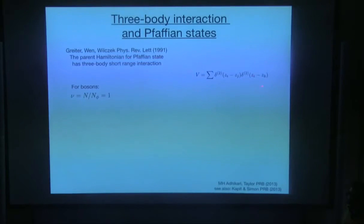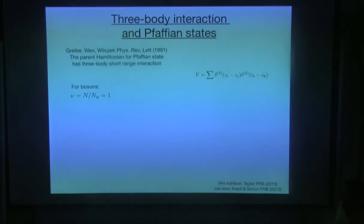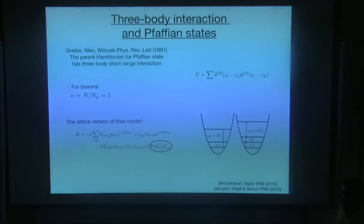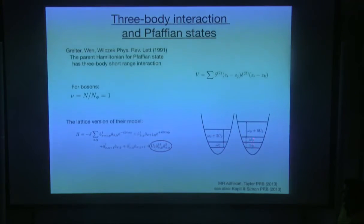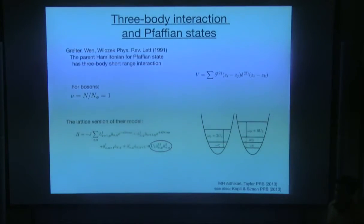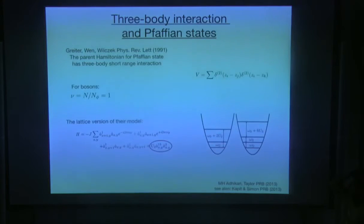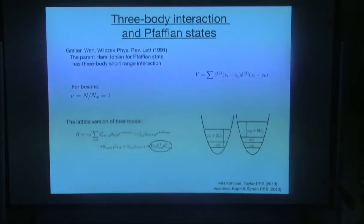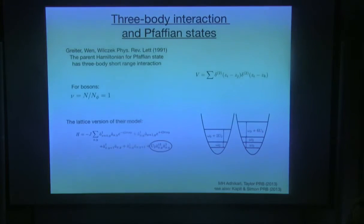I would like to highlight another parent Hamiltonian that can have topological states, in particular Pfaffian states. In 1991, this gentleman wrote a paper that if you have a three-body interaction — the three-body interaction is cubic, like an anharmonic lattice that is harmonic at the two-level but has an anharmonicity at the third level — then we expect to have even more interesting states as the ground state. We looked into how we can make such three-body interaction in circuit QED systems.